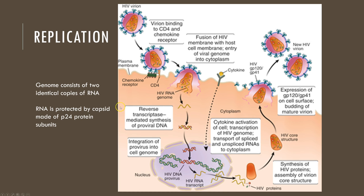The virion is going to bind via GP120 to CD4 and a co-receptor, either CCR5 or CXCR4 on the same cell, so that the virus can use those two co-receptors on the target cell. Then virus entry happens through fusion — GP120 and GP41 can often be left on the surface of the cell that the virus has fused to. At that point, reverse transcription occurs in the cytoplasm. Since this is an RNA virus, reverse transcriptase converts the RNA genome into cDNA. The reverse transcriptase is incredibly important and is the target of many drugs used to treat HIV, as well as HBV.